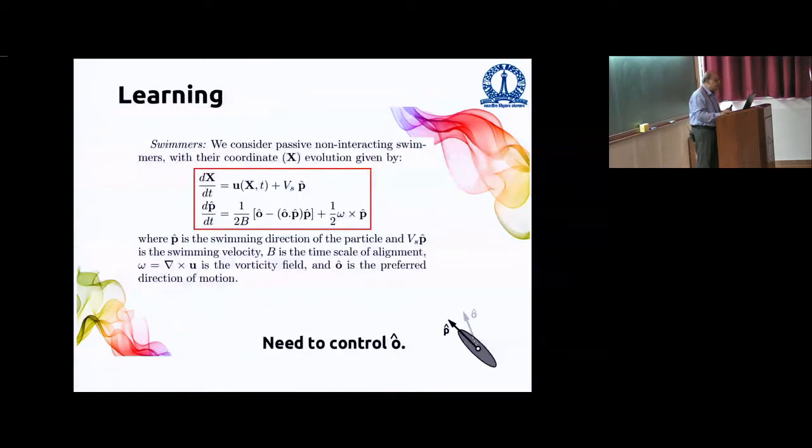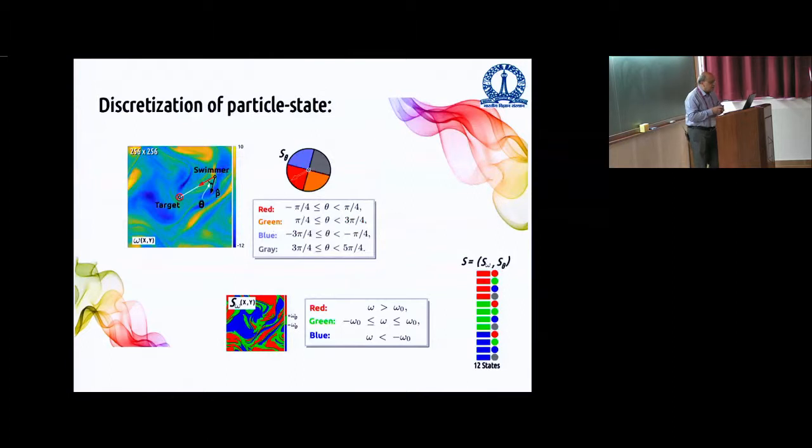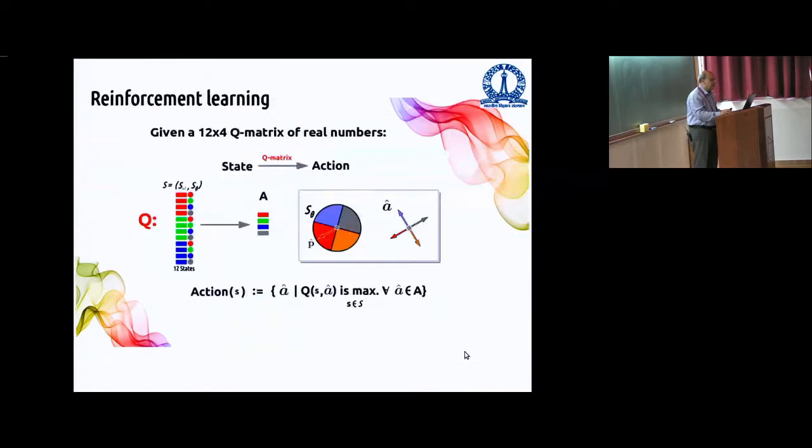There are many ways of doing this. What is required for optimal control is first to discretize the states of the particle. So if I look at the particle, of course, it can point in many different directions, which are the theta, the angle between p hat and the direction to the target. I discretize it. I put four possible values of theta in some ranges: red, green, blue, gray. And similarly, I discretize vorticity. Omega greater than omega naught is red. In some region, green, blue. So there are 12 states which are listed here. And then you have four actions. The actions, of course, also the O hat can point in any direction, but we pick four. One is in the direction of the target. One is against the target. One is perpendicular to that and anti-perpendicular. They are given there.